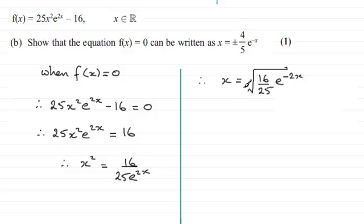When I take the square root, don't forget we can have plus or minus as our answers. Therefore x = ±, and the square root of 16/25 is 4/5 if we square root top and bottom, and the square root of e^(-2x) is e^(-x). Okay?